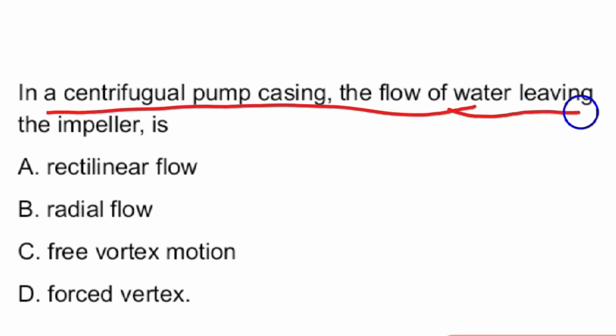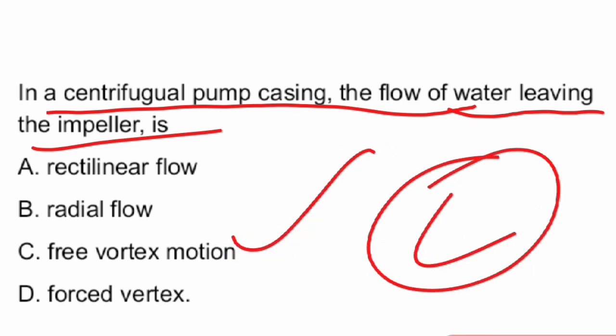Next question: In a centrifugal pump casing, the flow of water leaving the impeller is what type of motion? The answer is Option C — free vortex motion.